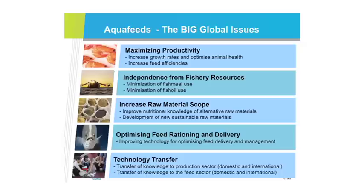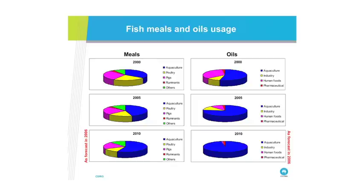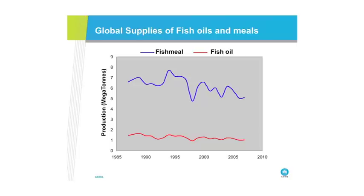The other big global issue I'll touch on is what to feed the fish of the future — aqua feeds, maximising productivity, becoming independent from fishery resources, given 30 million tonnes of wild harvest fisheries being drawn on. Back in 2000, aquaculture used a certain share of the world's wild-harvest fish meal; it now uses much more. In terms of fish oil, back in 2000 it was about half; now almost all of the wild-harvest fish oil is used by aquaculture. As the industry grows, that is simply unsustainable.